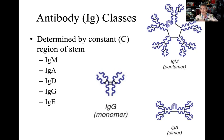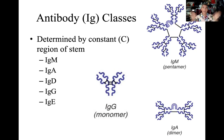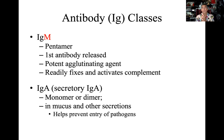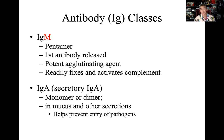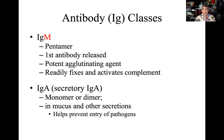Imagine an inflamed, infected area full of bacteria. This large, bulky pentameric IgM has ten variable regions that can capture, hold, and start to agglutinate — clumping the bacteria together. IgM readily fixes and activates complement, recruiting the complement cascade that's part of our innate immune system — C3b going all the way through C9 to the membrane attack complex. All of that is linked back to IgM.